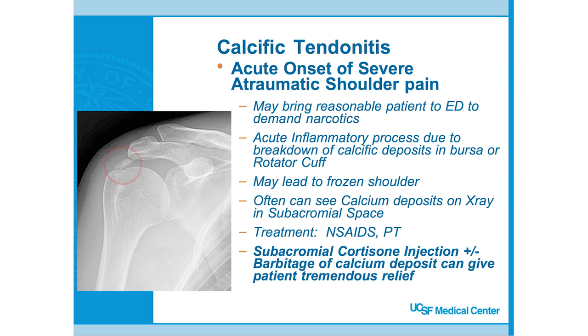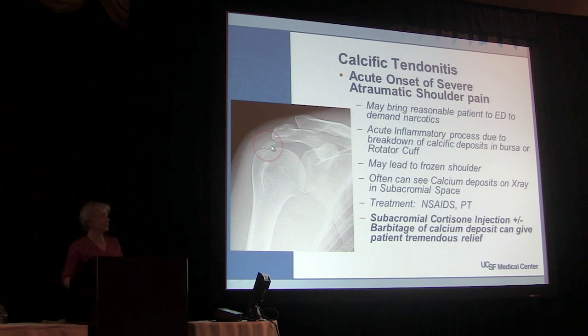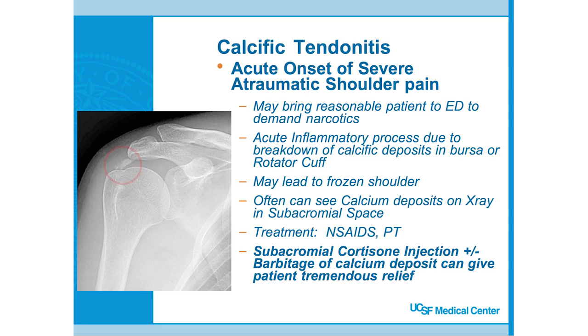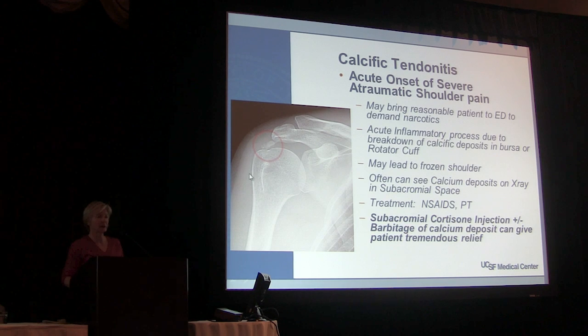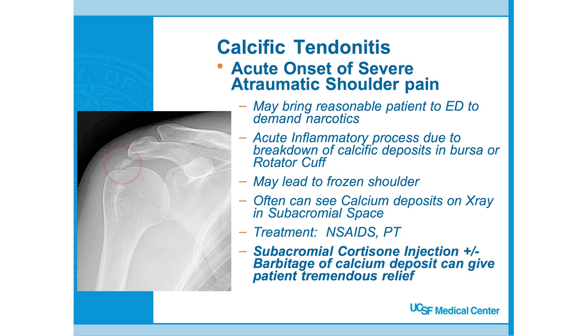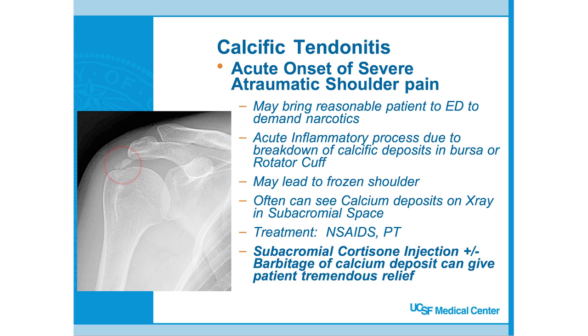Calcific tendonitis is an acute inflammatory process due to breakdown of calcium deposits in the bursa or rotator cuff. A little piece breaks off and causes a huge amount of inflammation in the subacromial space — patients have pretty horrific pain just from doing some task around the house. It can lead to frozen shoulder because the patient doesn't want to move the arm. X-ray often shows the calcium deposit. Treatment is anti-inflammatories and physical therapy; patients get tremendous relief from a cortisone shot. There's also a procedure called barbotage where you use ultrasound guidance or X-ray localization, insert a needle to break up the calcium deposit, and inject cortisone — it works very well.